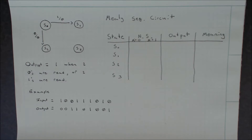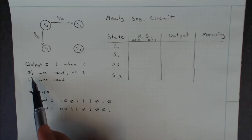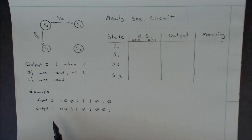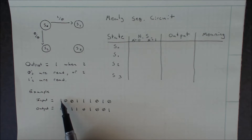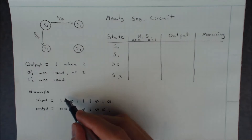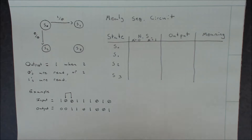Today we're going to be looking at this problem in front of us. We have a sequence detector where, by this definition, we're going to output a one when we read two zeros or when we read two ones, in any order. For example, if we begin and get an input of a one, our output will be zero. If we then get an input of a zero, our output will still be zero. But when we get this second zero, we have now read two zeros, and our output will be one.